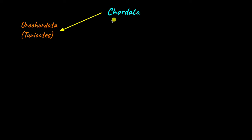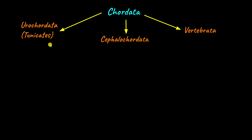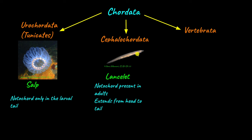Chordata is a huge phylum, classified into three main subphyla: Urochordata or Tunicates, Cephalochordata or Cephalochordates, and Vertebrata. In tunicates such as Salp, which are marine organisms, the notochord is present only in the larval stage — and that too only in the tail. This fits because the term 'Uro' actually means tail. In Cephalochordates such as Lancelets, which live in shallow waters, the notochord is present in adults as well, meaning it is present throughout the organism's life, often extending from the head to the tail.